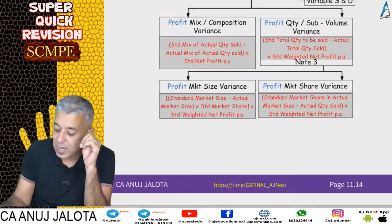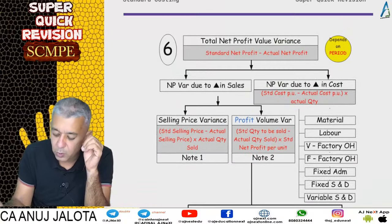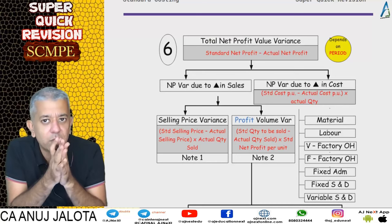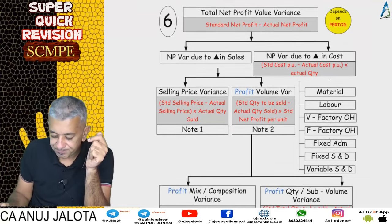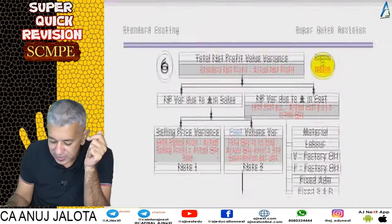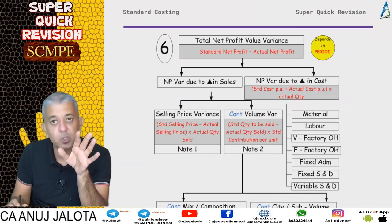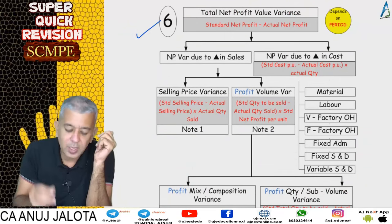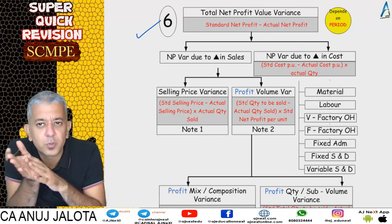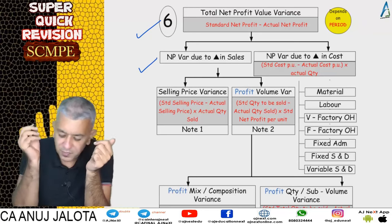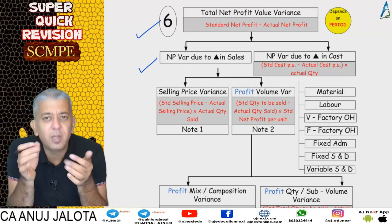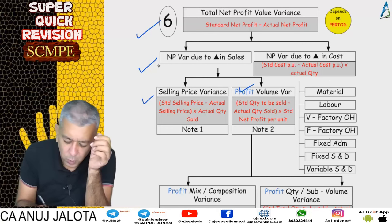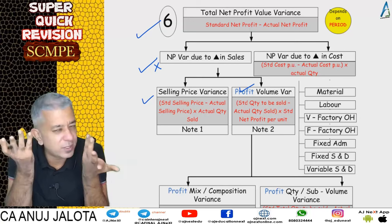Now, which variances are there? I've divided them into two parts: under absorption costing and under marginal costing. Under absorption costing, the total net profit variance is: how much profit you should have earned minus how much profit you actually earned. The net profit variance due to change in sales — although you can compute it — the ICAI calculates this variance as the sum of its breakups, so in this revision I'm not explaining how to calculate it directly.